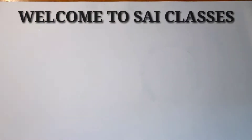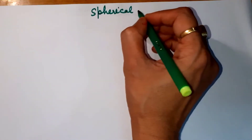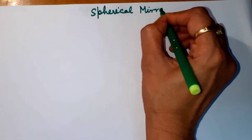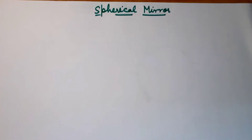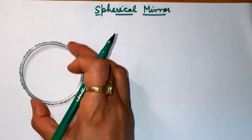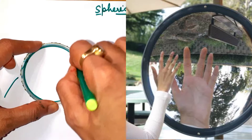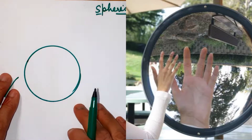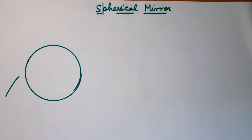Hello everyone, welcome to sign classes. Today we will discuss about spherical mirrors — what is a spherical mirror and what are the terms used in spherical mirrors. By the name it is clear: anything which is made up of a sphere, a sphere made up of glass, and if you cut its section it will become a spherical mirror. A spherical mirror is a special type of mirror whose surface is a part of a sphere.